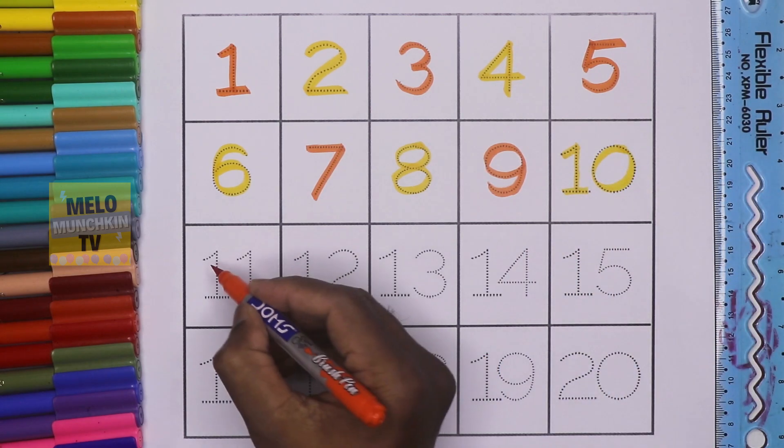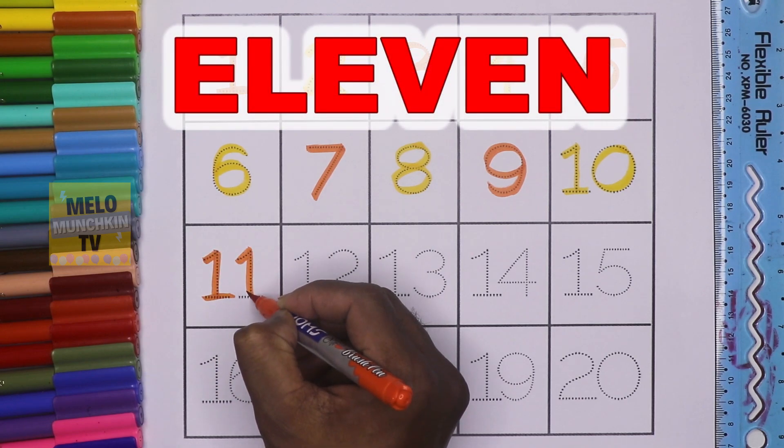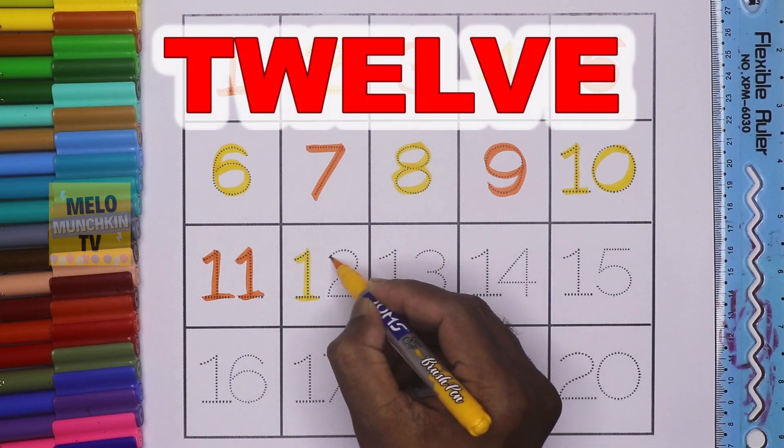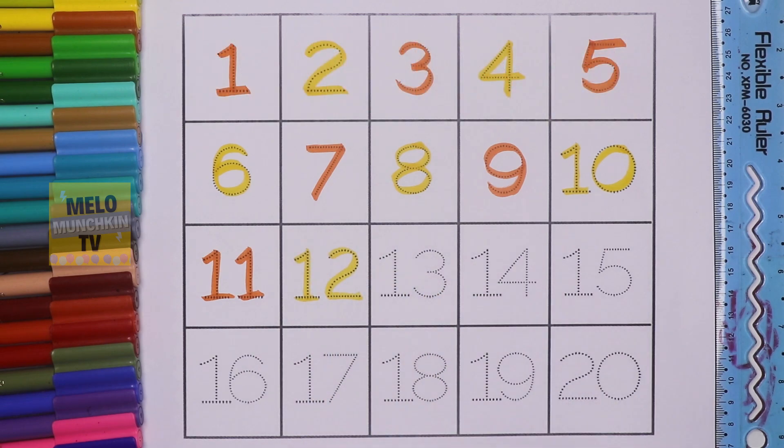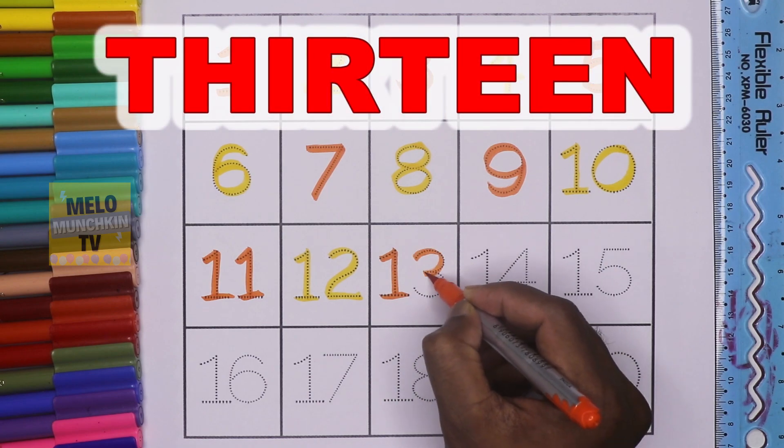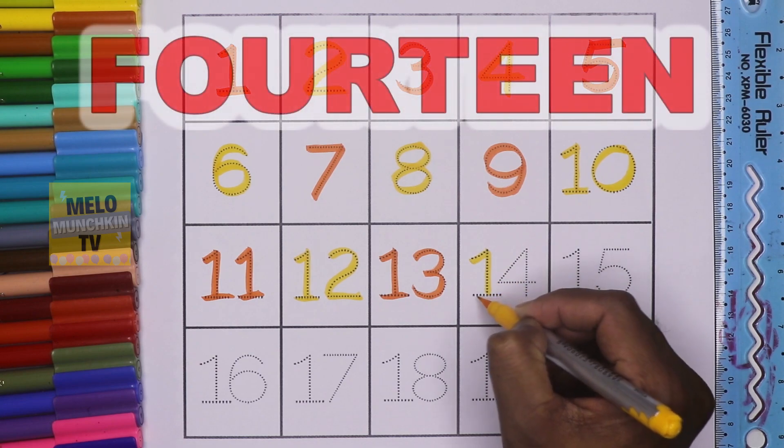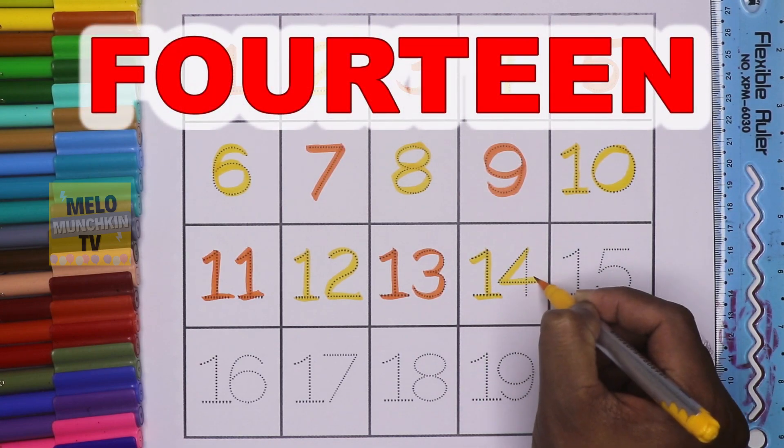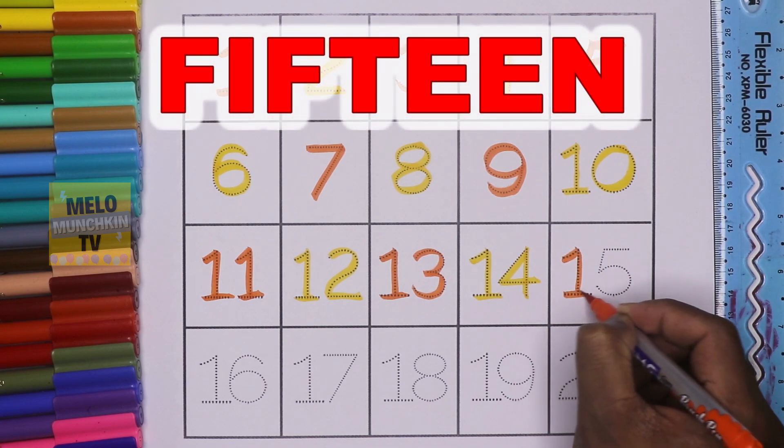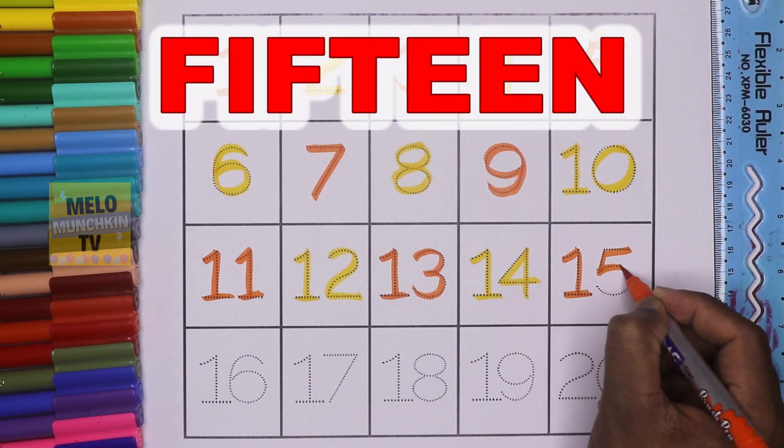This is number 11. E-L-E-V-E-N-11. This is number 12. T-W-E-L-V-E-12. This is number 13. T-H-I-R-T-E-E-N-13. This is number 14. F-O-U-R-T-E-E-N-14. This is number 15. F-I-F-T-E-E-N-15.